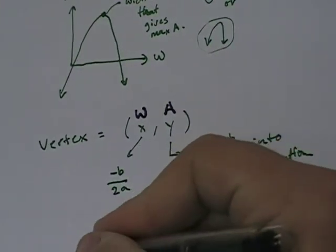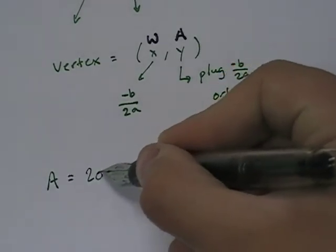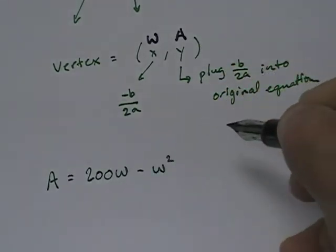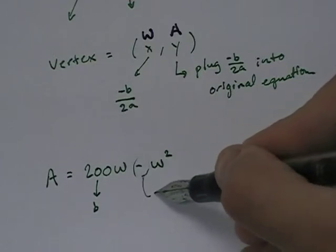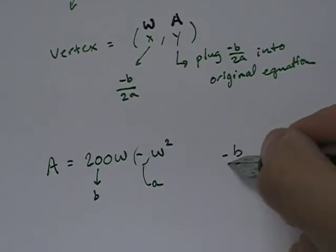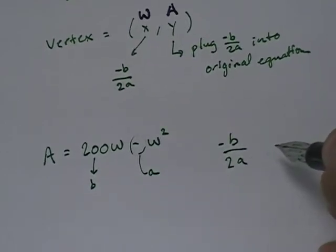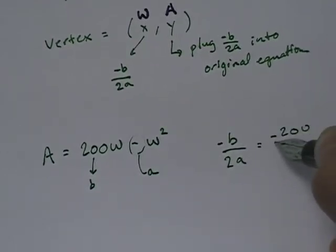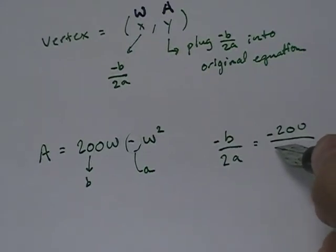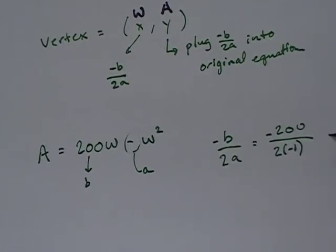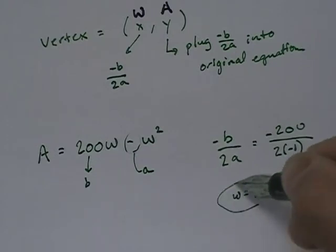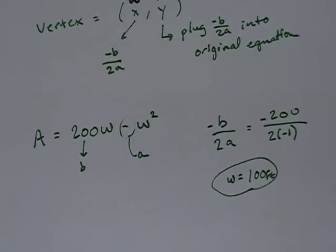So let's do this. I have A equals 200W minus W squared. And this is b and this is a. And so I need negative b over 2a which will be negative 200 over 2 times negative 1. And basically what this boils down to is I have negative 200 divided by negative 2. Well, negative 200 divided by negative 2 is 100.